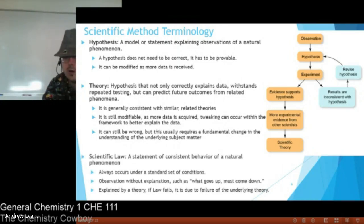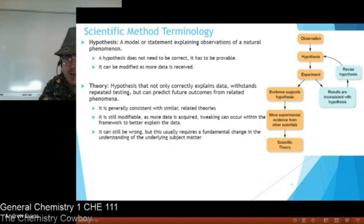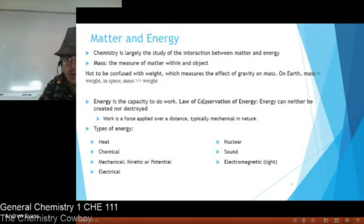And that's where we get to a law. A law is a statement of consistent behavior of a natural phenomenon. So this always occurs under a standard set of conditions. It's an observation without an explanation. The basic idea is it is a statement of fact. Looking back at our energy, we have the law of conservation of energy. It states energy can neither be created nor destroyed. Doesn't explain why this is how this comes to be, just a statement that energy cannot come out of nothingness and will never disappear into nothingness. It can only dissipate, it can only transfer.